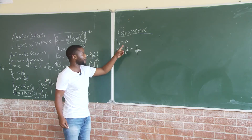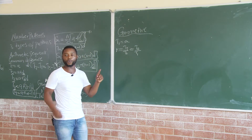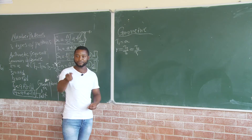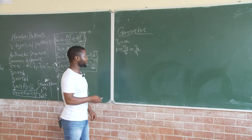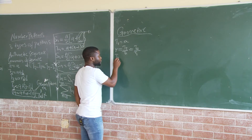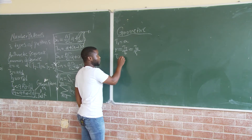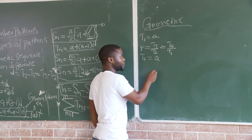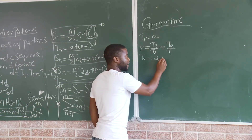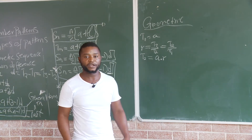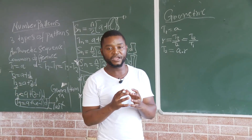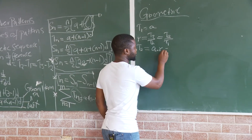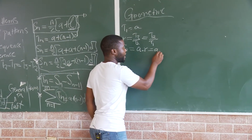Remember that the common ratio is T2 divided by T1. So, when we want to go forward, what do we do? We multiply with the common ratio. That means, if we use T1 and T2, it means that T2 equals T1 multiplied by R.